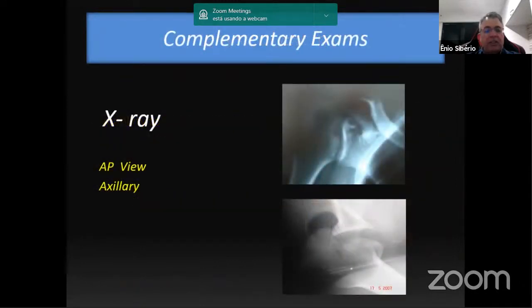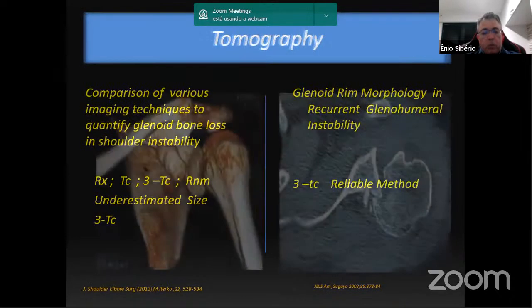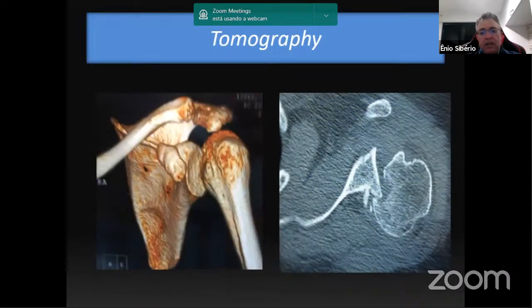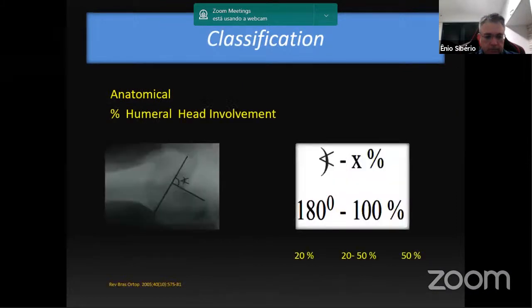We routinely use x-rays: an AP view, which shows the loss of joint contours, and an axillary view, which is the best position to make a diagnosis and quantify the bone damage. Tomography is a reliable method — we normally use 3D reconstruction and axillary view. There are several classifications; one of them is anatomical. Another classification determines the percentage of involvement of the reverse Hill-Sachs lesion: less than 20%, from 20 to 50%, and above 50%.